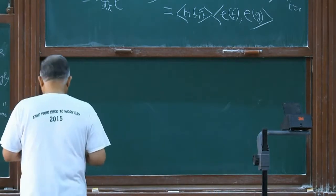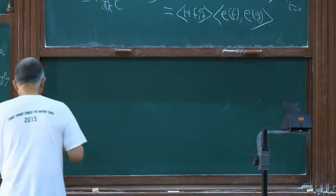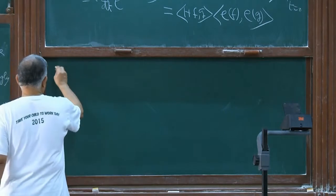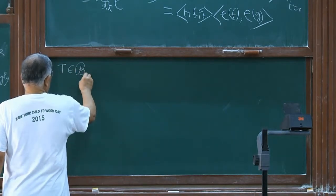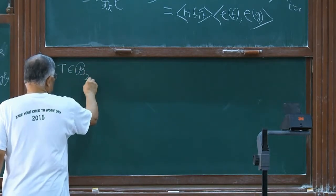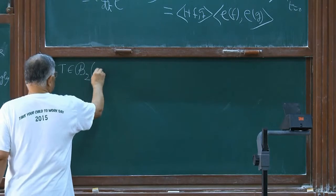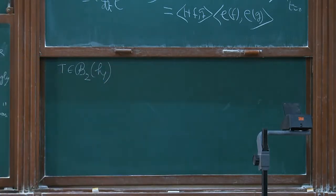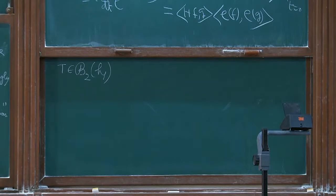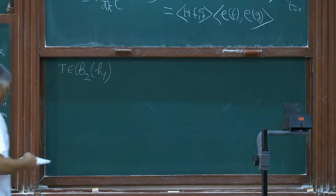Let T not only be bounded but a Hilbert-Schmidt operator in the underlying Hilbert space. So I make it a little more restricted — namely, a Hilbert-Schmidt operator. Then consider a map from here.